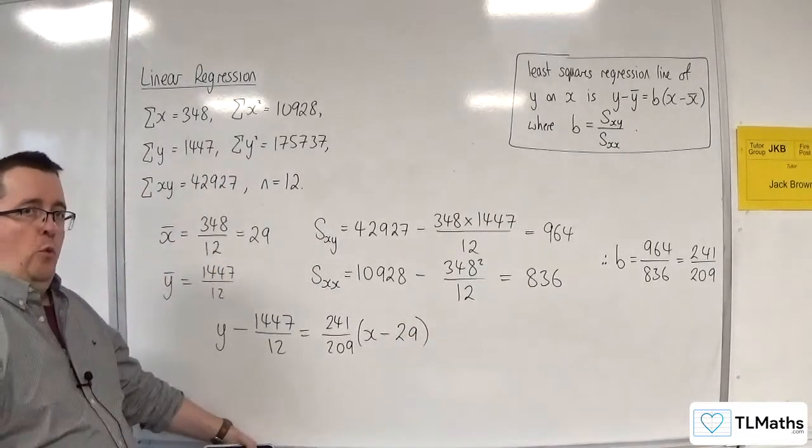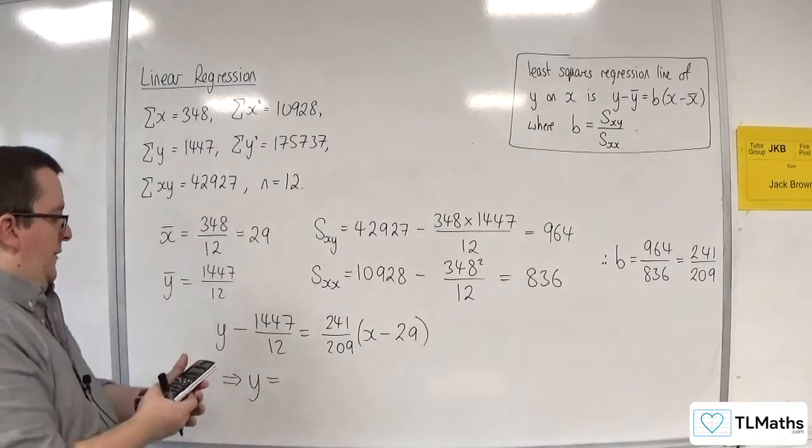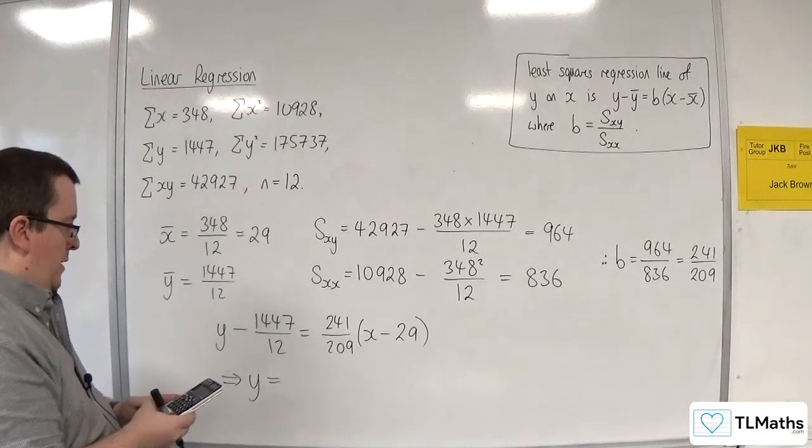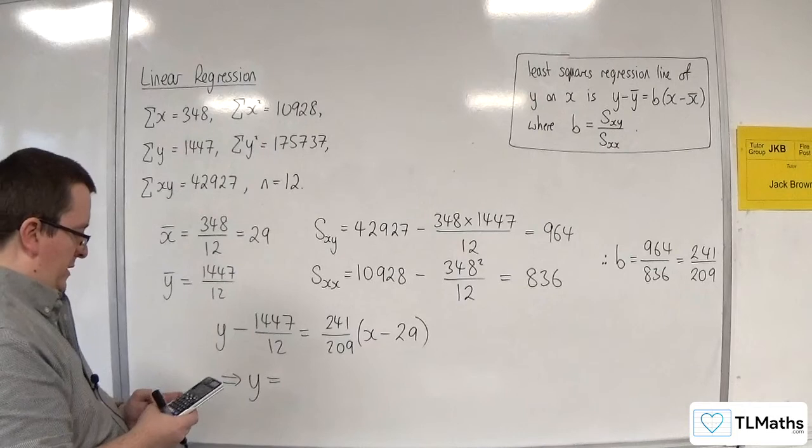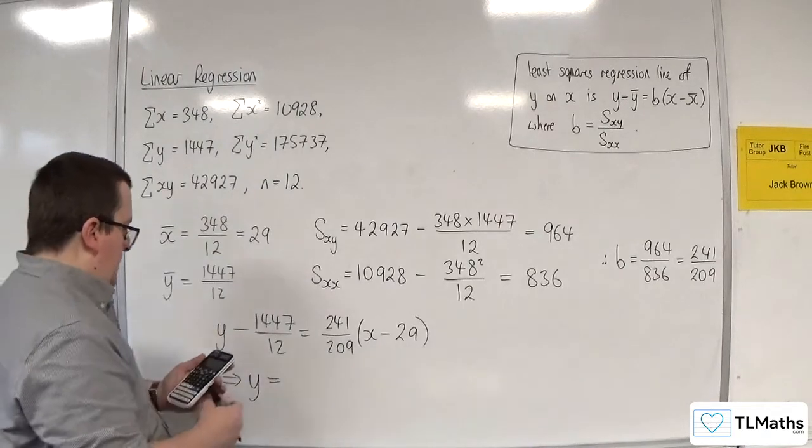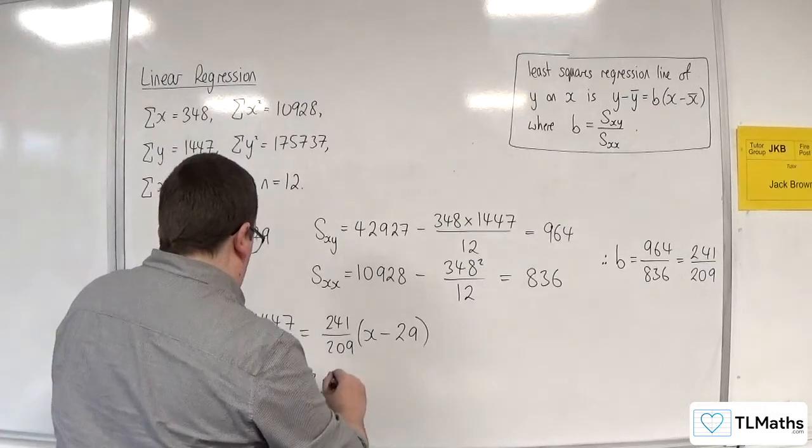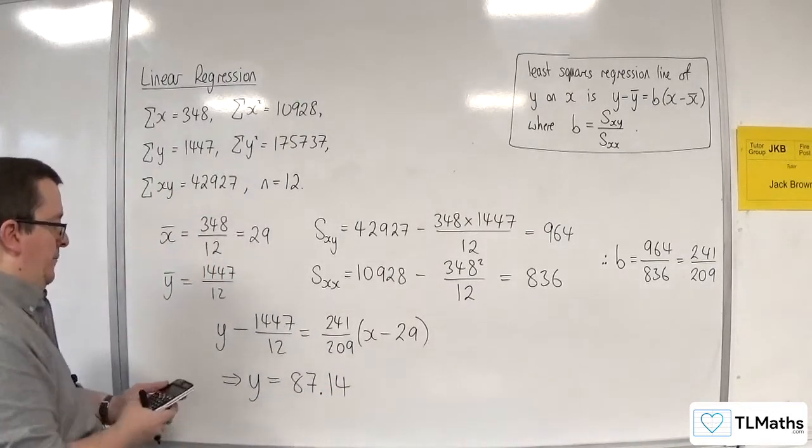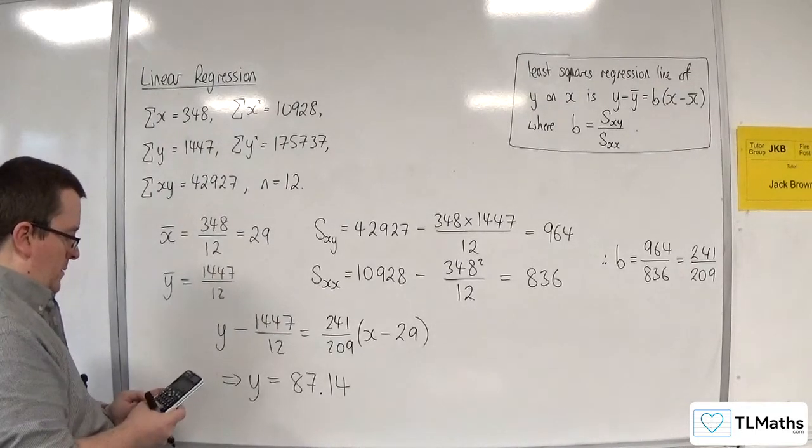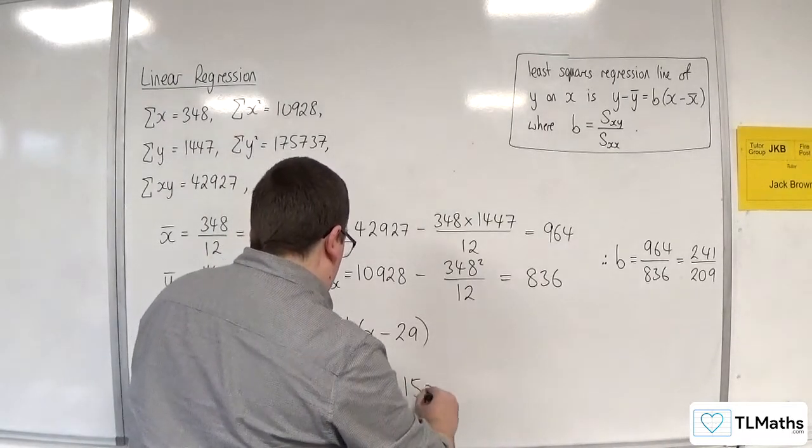Now if you want to get that into the form y equals a plus bx, then that's y is equal to 241 over 209 times by minus 29, and I want to add on 1447 over 12. So that's 87.14. Let's go to two decimal places. And then we've got 241 over 209, so plus 1.15x.